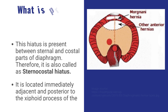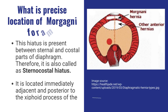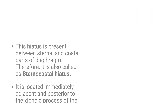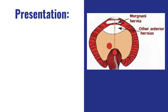Precise location: this hiatus is present between the sternal and costal parts of the diaphragm. Therefore, it is also called the sternocostal hiatus. It is located immediately adjacent and posterior to the xiphoid process of the sternum.